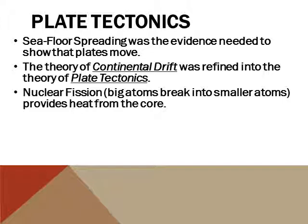Basically what happens is nuclear fission — which is big atoms breaking into smaller atoms — releases heat in the Earth's core, and that provides the heat that serves as the mechanism for the entire Earth. Nuclear fission is not the only source of heat. The way the Earth formed originally, it was very hot initially, and that heat is still around as well. But the nuclear fission keeps that heat going as the Earth progresses.